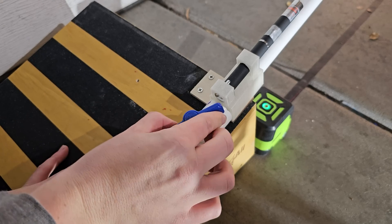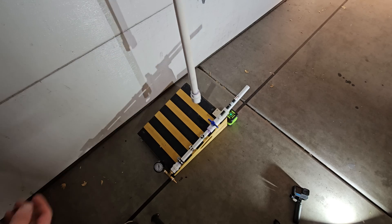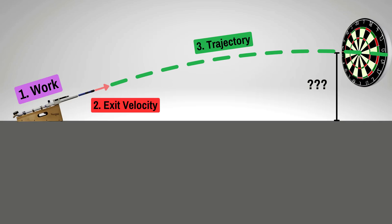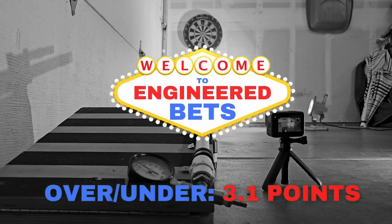To hopefully avoid alignment issues, I attached a laser to the barrel, and these PVC valves can be tough to open, so I made this jig to hopefully open it as quickly as possible. Vegas was pretty skeptical of some of these assumptions, so they set the line at 3.1 points,